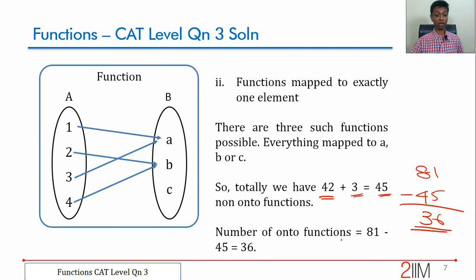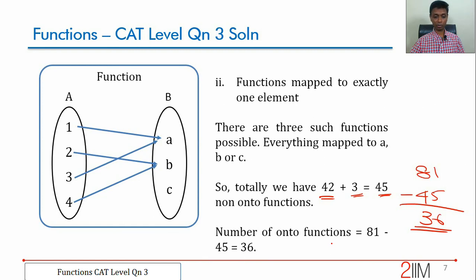Therefore, from {1, 2, 3, 4} to {a, b, c}, we can have 36 different onto functions. The terms onto, one-to-one, surjective, injective, bijective are all important — both what they mean and how to count them. Do not gloss over this part of functions; it is very important.